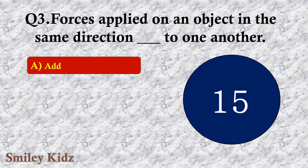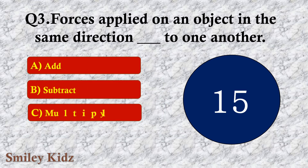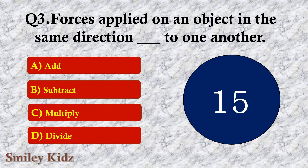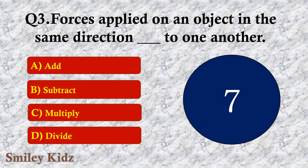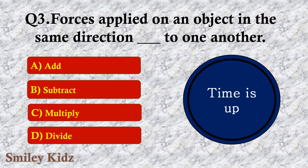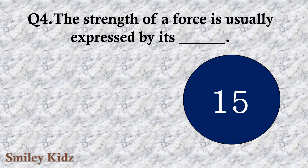Question number three: Forces applied on an object in the same direction dash to one another. The options are A. Add, B. Subtract, C. Multiply, or D. Divide. The right answer is option A — Add. Forces applied on an object in the same direction add to one another.